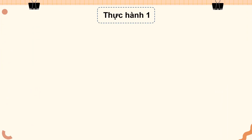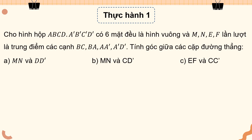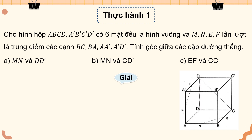Phần thực hành: cho hình hộp ABCD A'B'C'D' có 6 mặt đều là hình vuông. M, N, E, F lần lượt là trung điểm của các cạnh BC, BA, AA', A'D'. Yêu cầu tính góc giữa MN và DD'. Phương pháp: cố định 1 đường và vẽ 1 đường song song, hoặc từ 1 điểm bất kỳ vẽ 2 đường song song với MN và DD'.